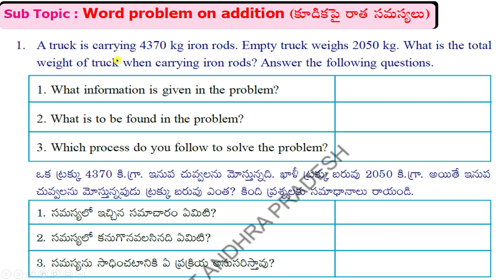First one: a truck is carrying 4,370 kilograms of iron rods. Empty truck weighs 2,050 kilograms. What is the total weight of the truck when carrying iron rods? Let's answer the following questions.